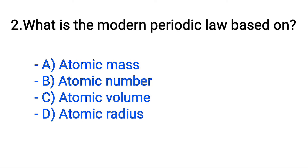Question number 2. What is the modern periodic law based on? Option A: Atomic mass. B: Atomic number. C: Atomic volume. D: Atomic radius. The correct answer is option B, atomic number.